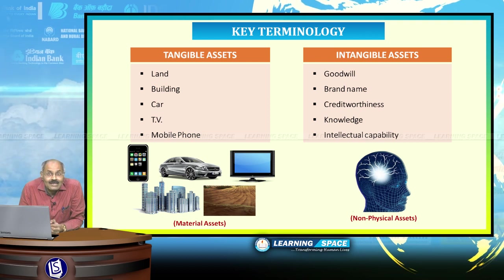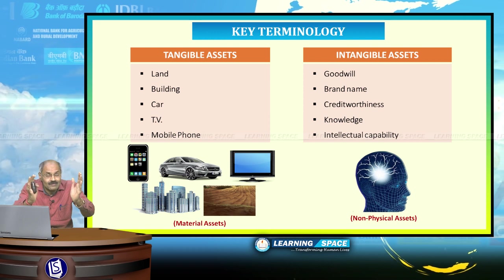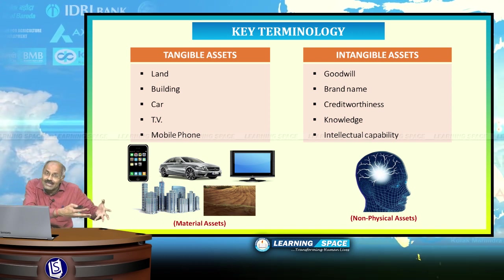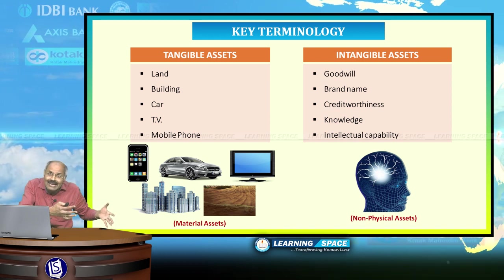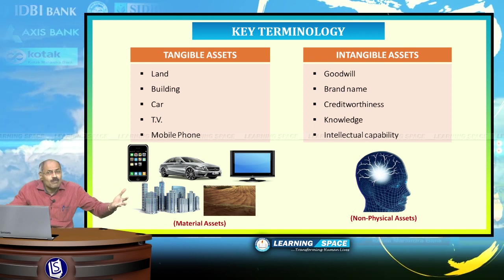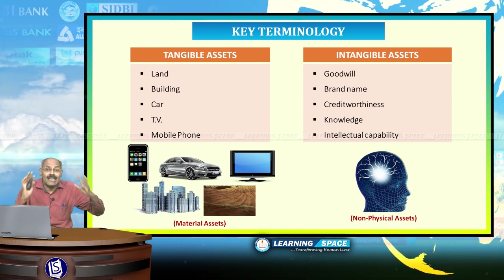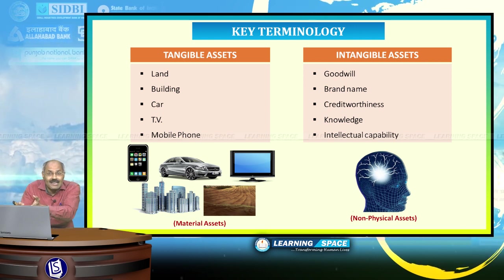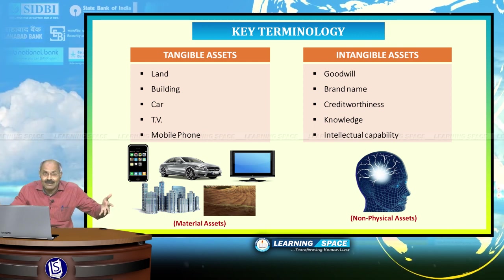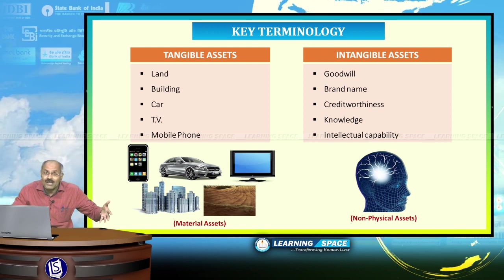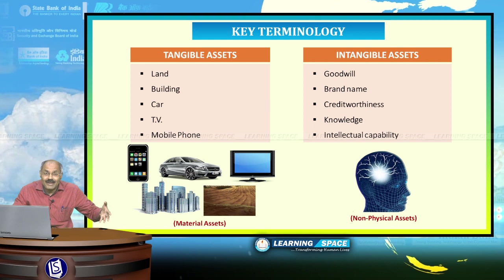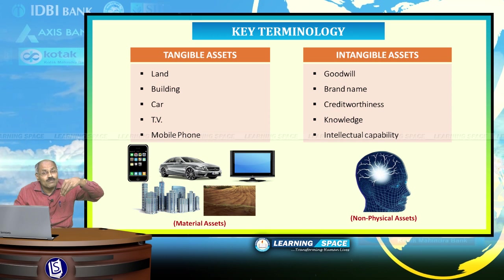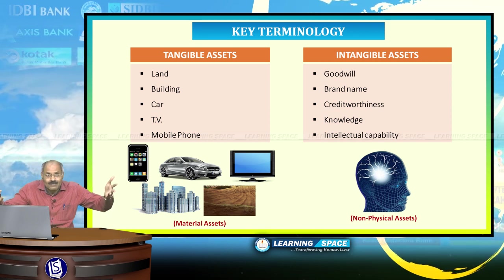Tangible assets are those which can be seen with the naked eye — buildings, TVs, cars, mobile phones are all examples of tangible assets. But most important are intangible assets — you cannot see them with your naked eye. They include goodwill; for example, when someone mentions APJ Abdul Kalam, the respect and service he rendered comes to mind. That type of goodwill which comes to your mind is an intangible asset.